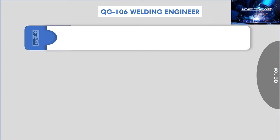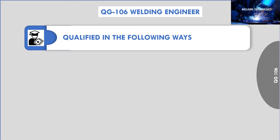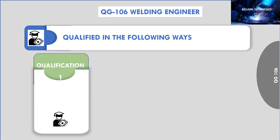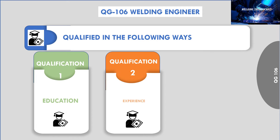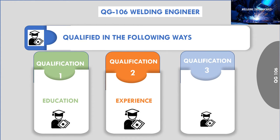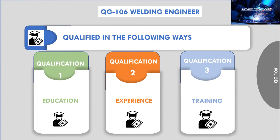Moving ahead to the next part of our video, we will learn how a welding engineer shall be qualified by the following three ways: Qualification 1 — Education; Qualification 2 — Experience; or Qualification 3 — Training.